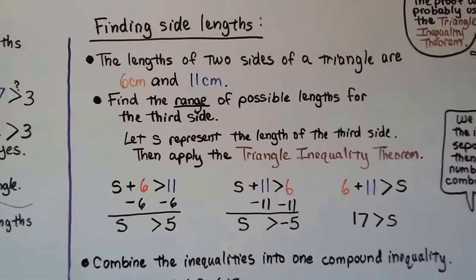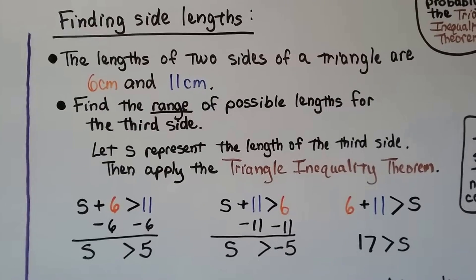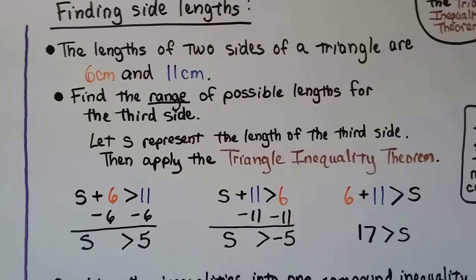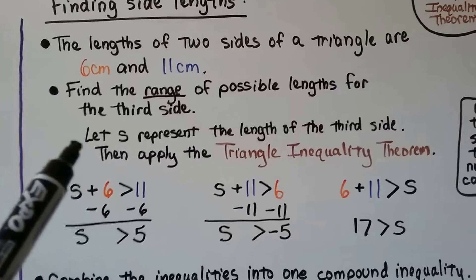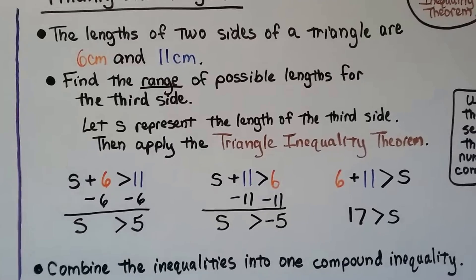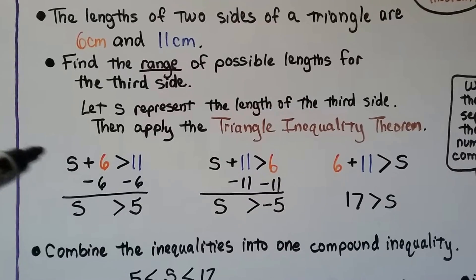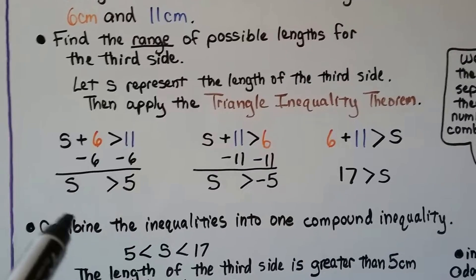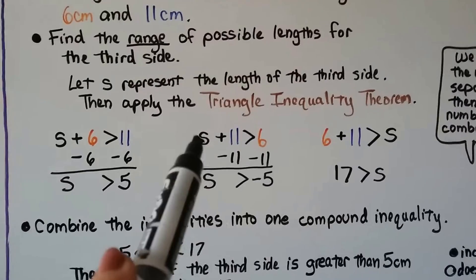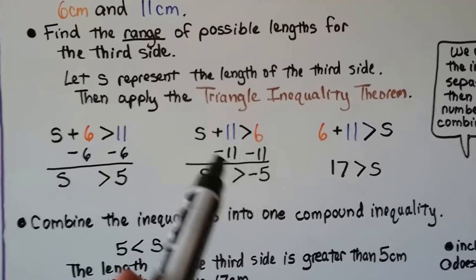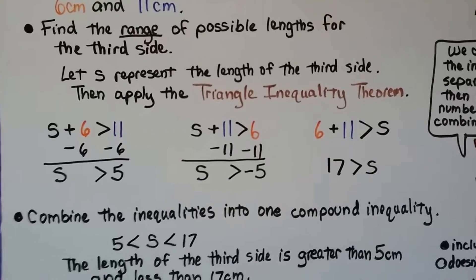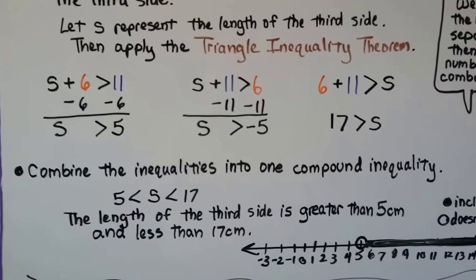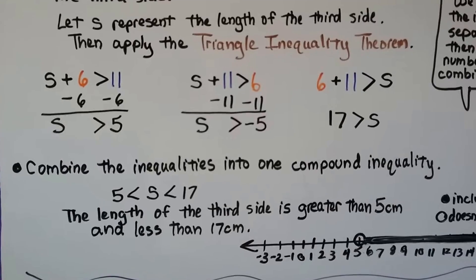Now here's finding side lengths. The length of two sides of a triangle are 6 centimeters and 11 centimeters. Find the range of possible lengths for the third side. We're going to let S represent the length of the third side, then apply the triangle inequality theorem. S plus 6 is greater than 11. We subtract 6 from both sides and get S is greater than 5. Then we do S plus 11 is greater than 6, subtract 11, we get S is greater than negative 5. Then 6 plus 11 is greater than S, that's 17 is greater than S. We combine the inequalities into one compound inequality.